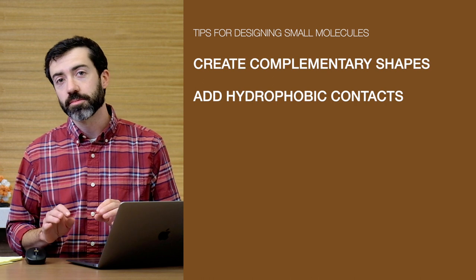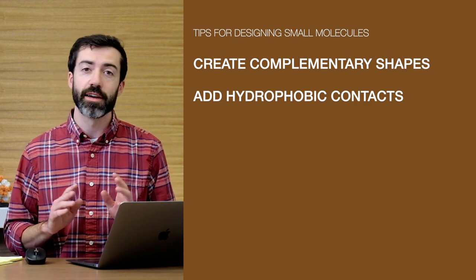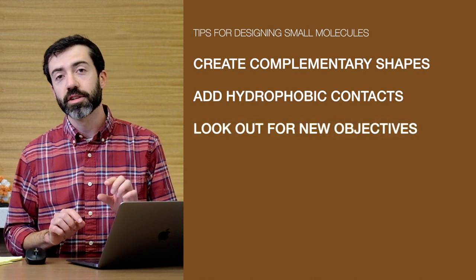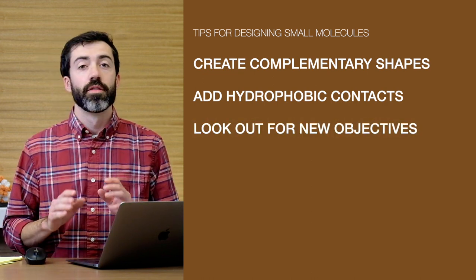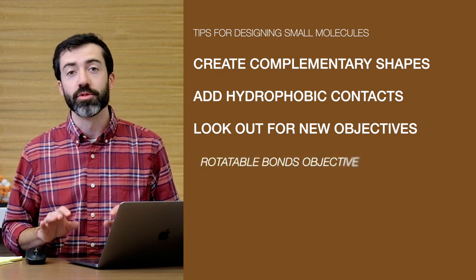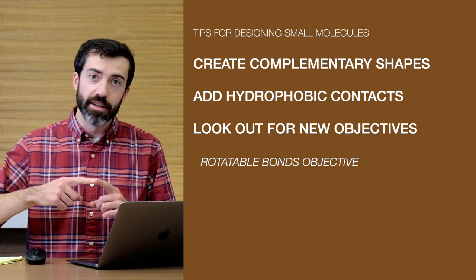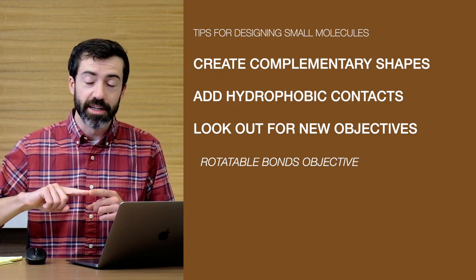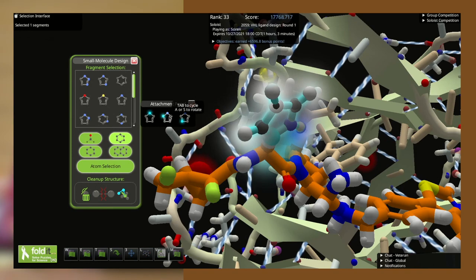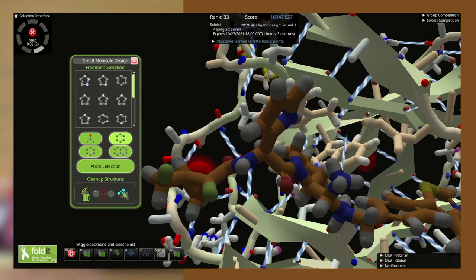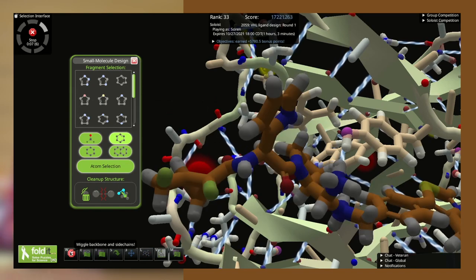There are also some concerns in small molecule design that we don't usually have to think about in protein design, and for that reason, small molecule design puzzles will have some new objectives. The first is all about rotatable bonds. Many of the chemical bonds that make up a small molecule can rotate, and this introduces flexibility. We don't want too much of this because a floppy small molecule is unlikely to adopt a rigid shape that will reliably bind to the target. You'll want to keep rotatable bonds to a minimum.